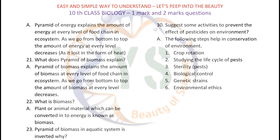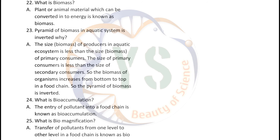Energy is lost in the form of heat at every level. What does pyramid of biomass explain? Pyramid of biomass explains the amount of biomass at every level of food chain in an ecosystem. As we go from bottom to top, the amount of biomass at every level decreases. What is biomass? Plant or animal material which can be converted into energy is known as biomass. The pyramid of biomass in aquatic ecosystem is inverted because the size or biomass of producers in an aquatic ecosystem is less than that of primary consumers, and the size of primary consumers is less than secondary consumers. So biomass increases from bottom to top, making the pyramid inverted.